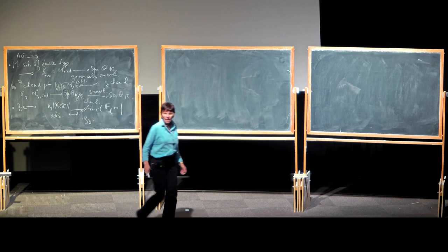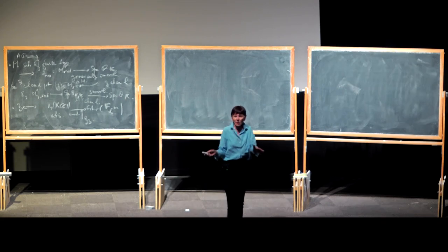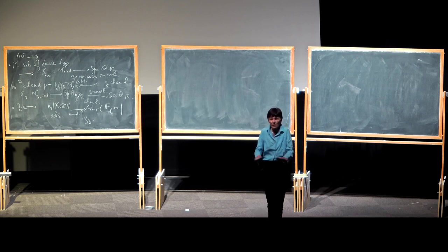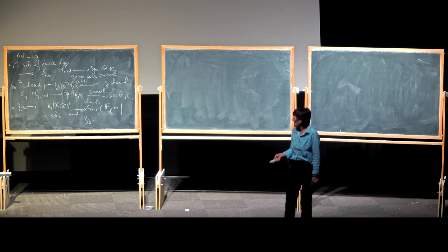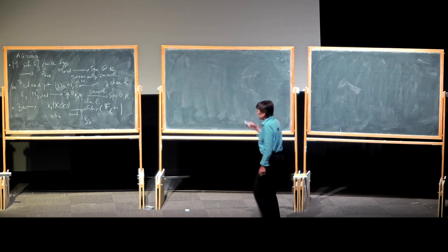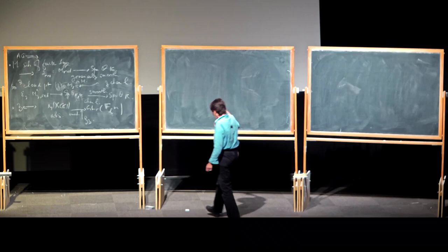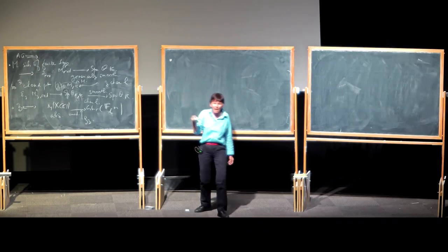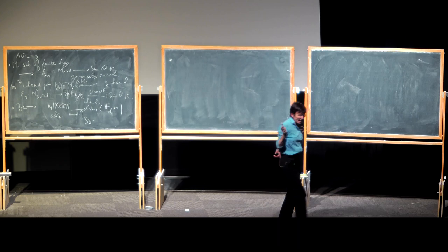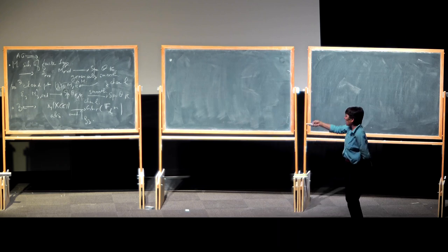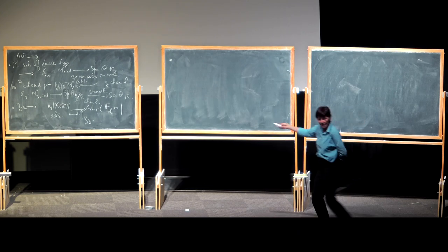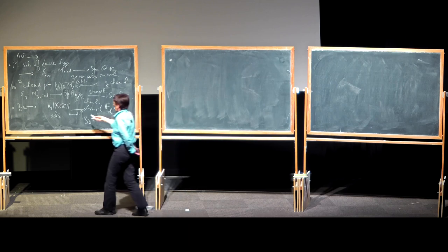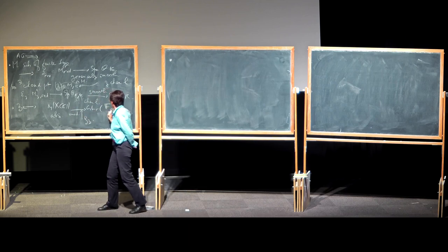So far this is algebraic geometry — nothing more, no arithmetic. But now we are in the world of a little bit of arithmetic geometry, because we stare at this representation. And now this group — the image — is finite, so it has finite order.